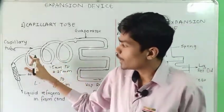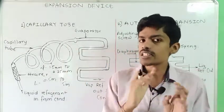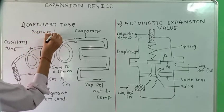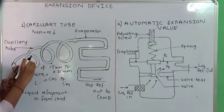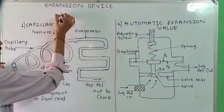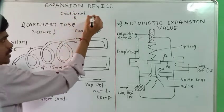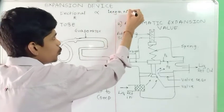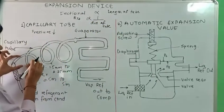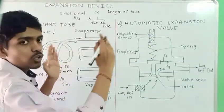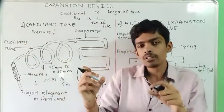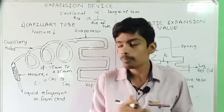Due to the smaller diameter of the tube, frictional resistance is offered and therefore pressure will drop. Frictional resistance is directly proportional to the length of the tube and inversely proportional to the diameter. So with maximum length and minimum diameter, the pressure drop will be maximum — more length and less diameter means more pressure drop.